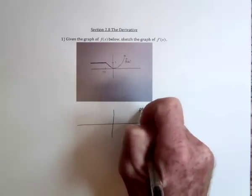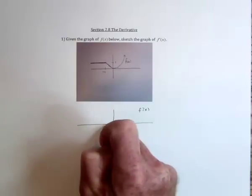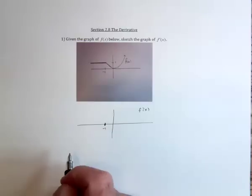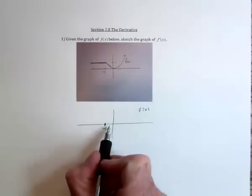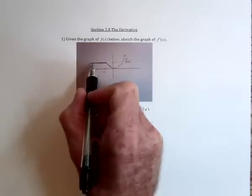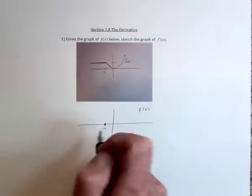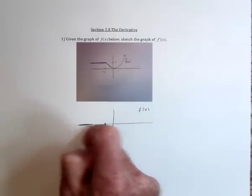So that means over here, when graphing the derivative up to negative one, it's zero. This is keeping track of what the slope is. In here, the slope is always zero, so the function is always zero.